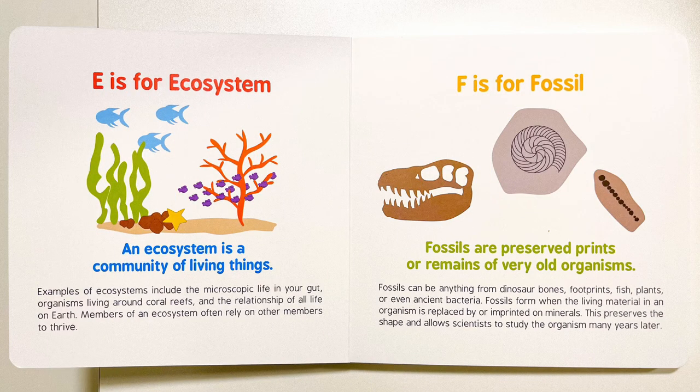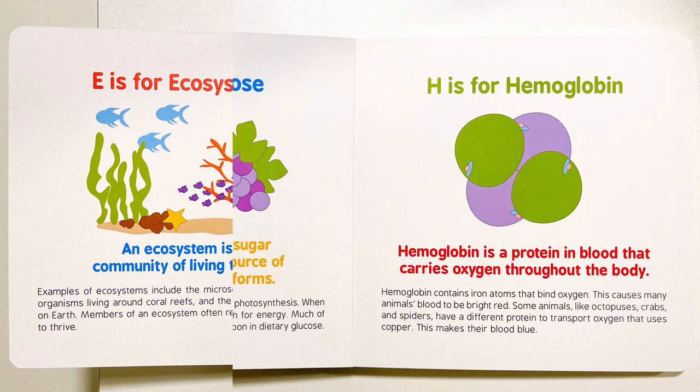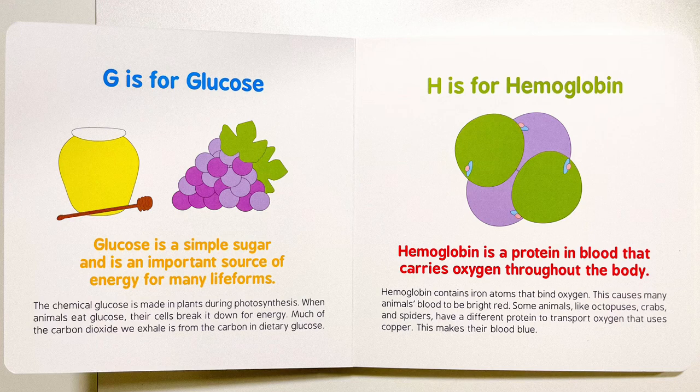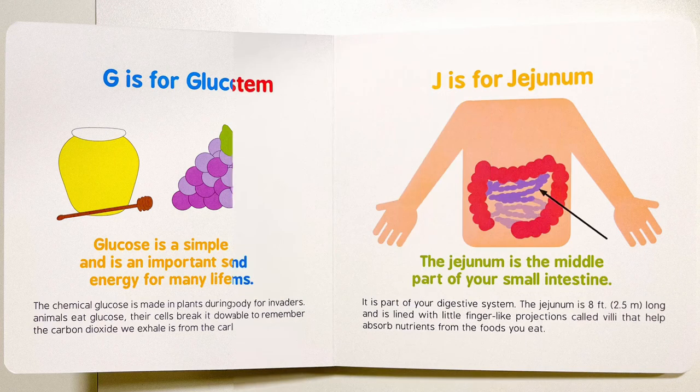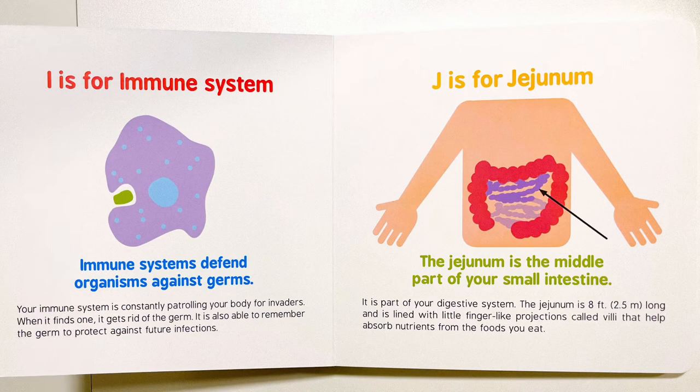E is for ecosystem. F is for fossil. G is for glucose. H is for hemoglobin. I is for immune system.